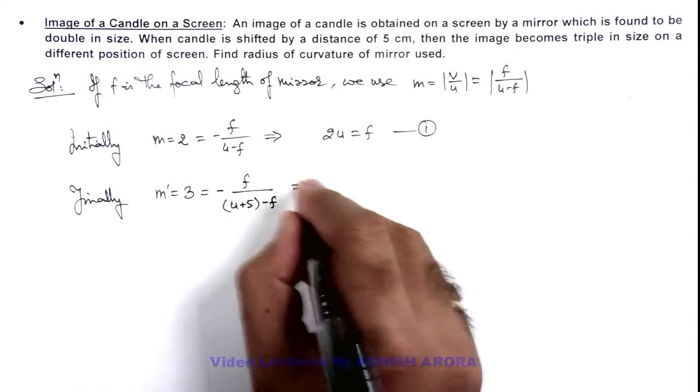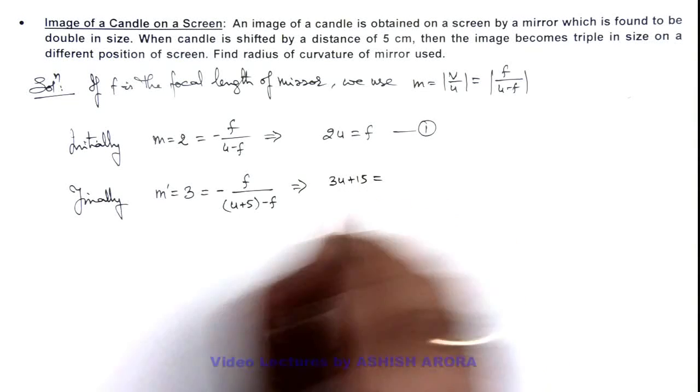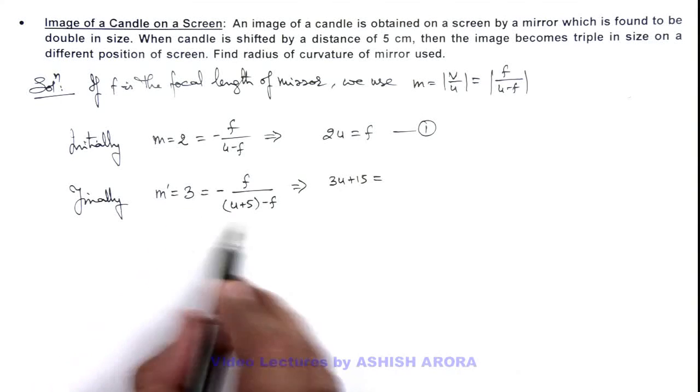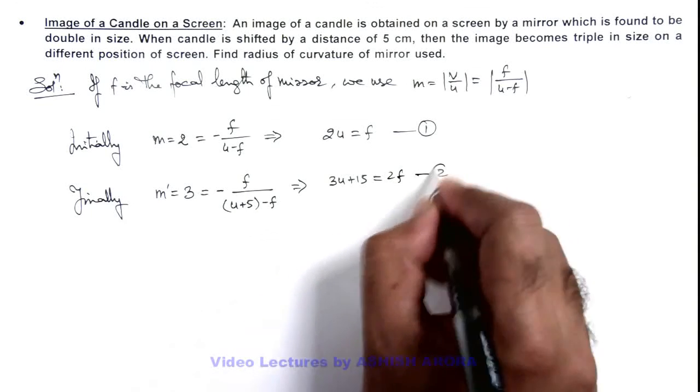So here I can write 3u plus 15 is equal to, you can see, 3f minus f, so this will be 2f. That is equation 2.